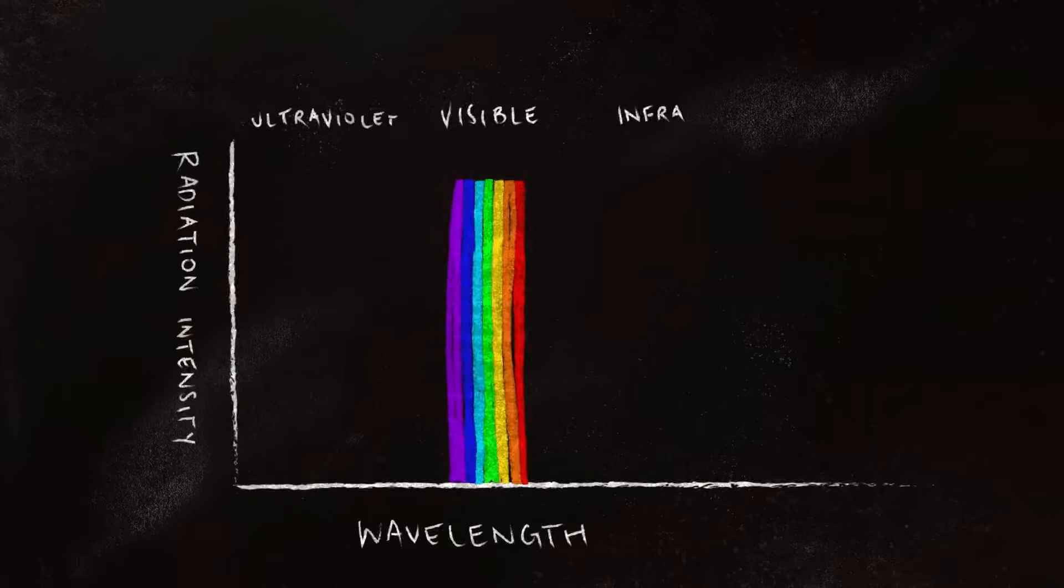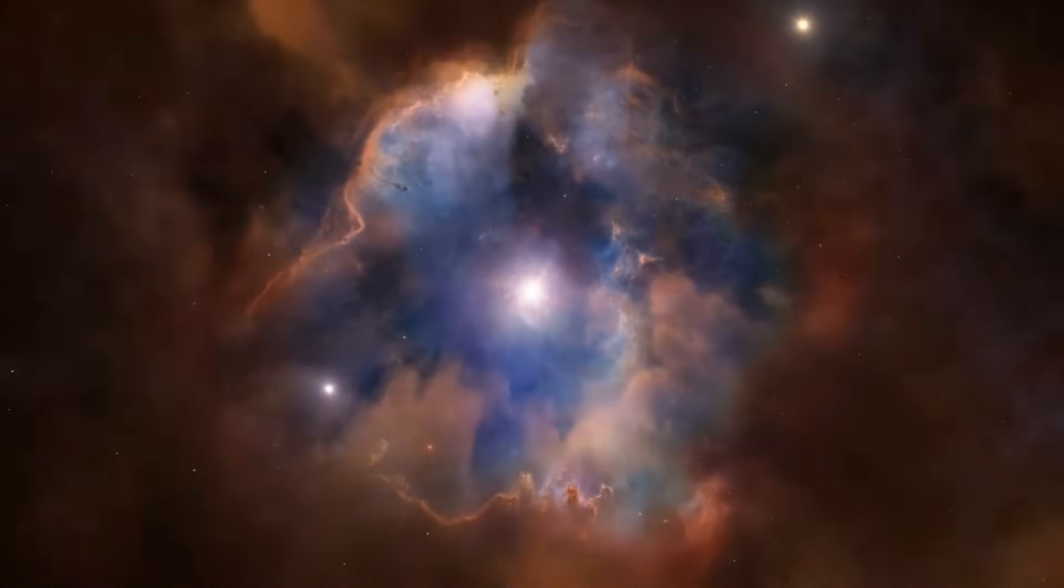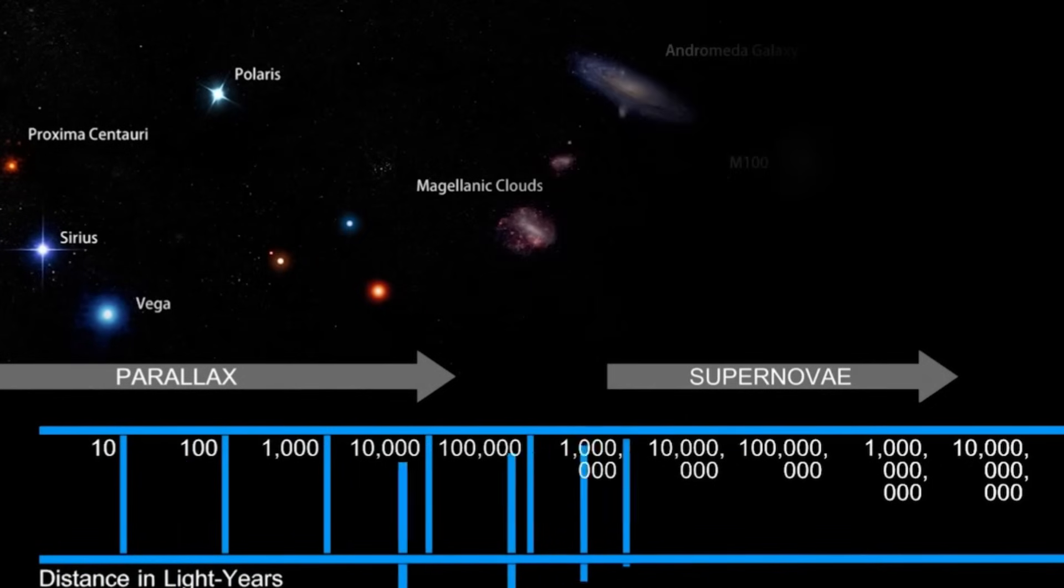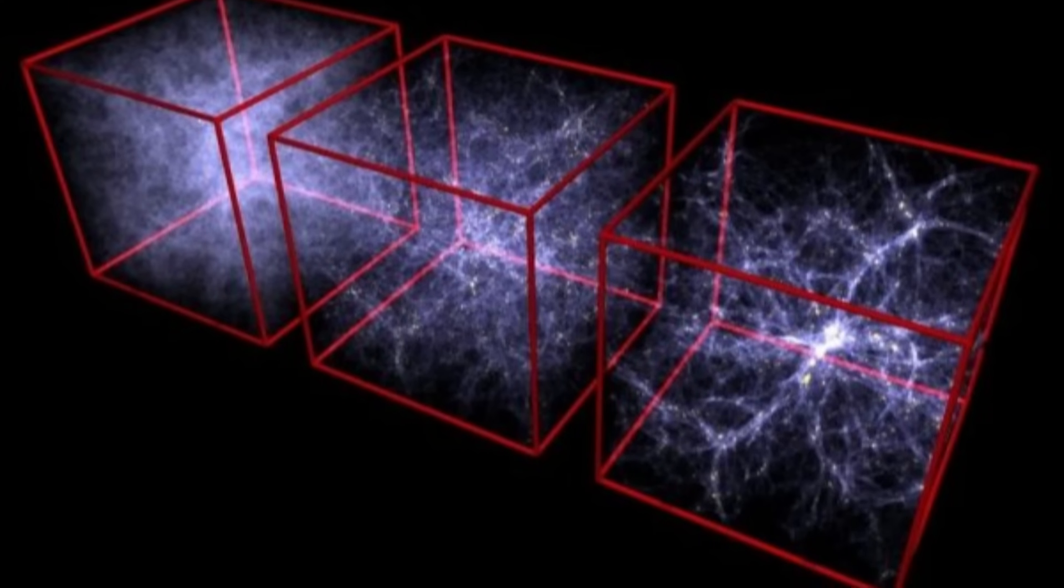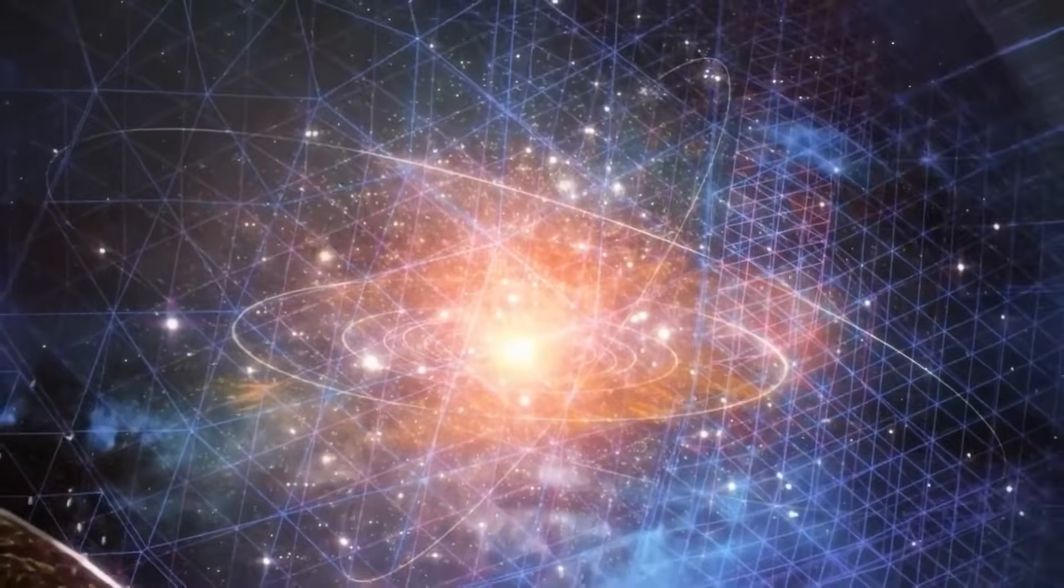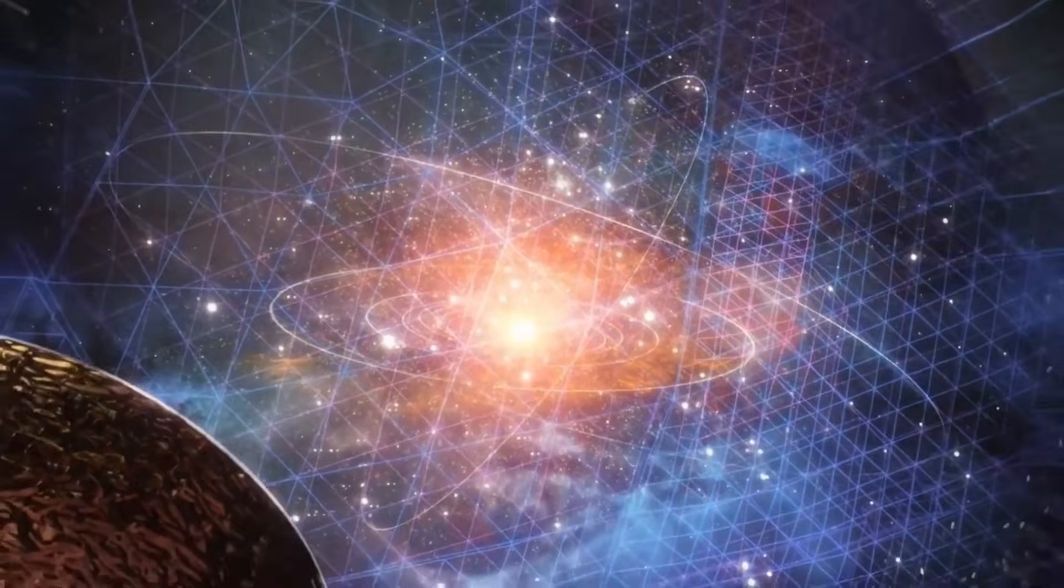If both measurements are correct, then something in our fundamental understanding of the universe is wrong. Could it be a flaw in how we measure cosmic distances, a new property of dark energy, or something even more groundbreaking, like a flaw in our understanding of gravity or the Big Bang itself? And this is where Michio Kaku steps in with a shocking theory.